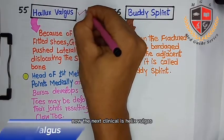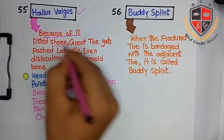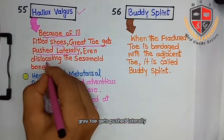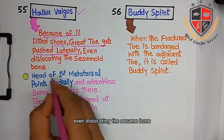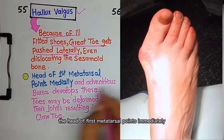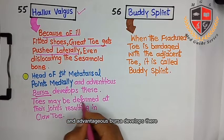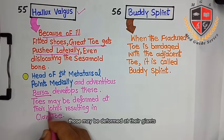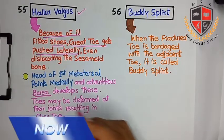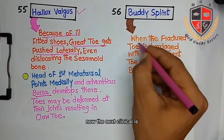The next clinical is hallux valgus. Because of ill-fitted shoes, the great toe gets pushed laterally, even dislocating the sesamoid bone. The head of the first metatarsal points medially and an adventitious bursa develops there. The toes may be deformed at their joints, resulting in clawing.